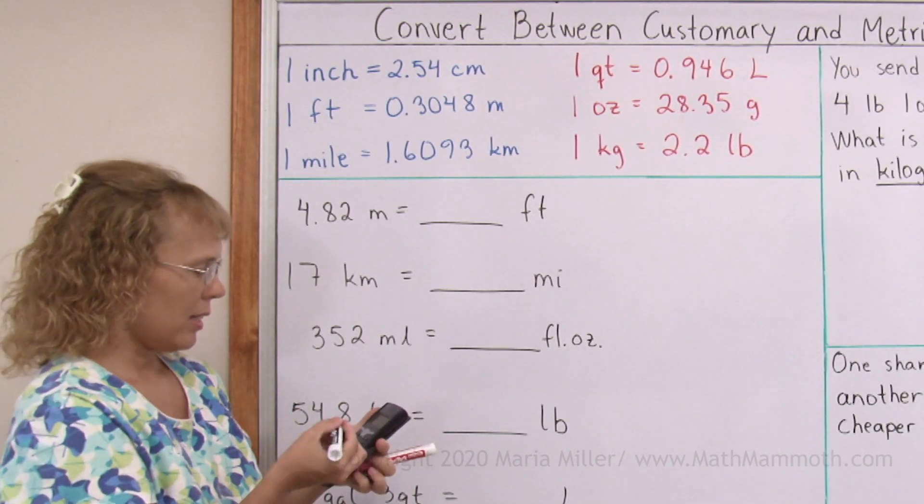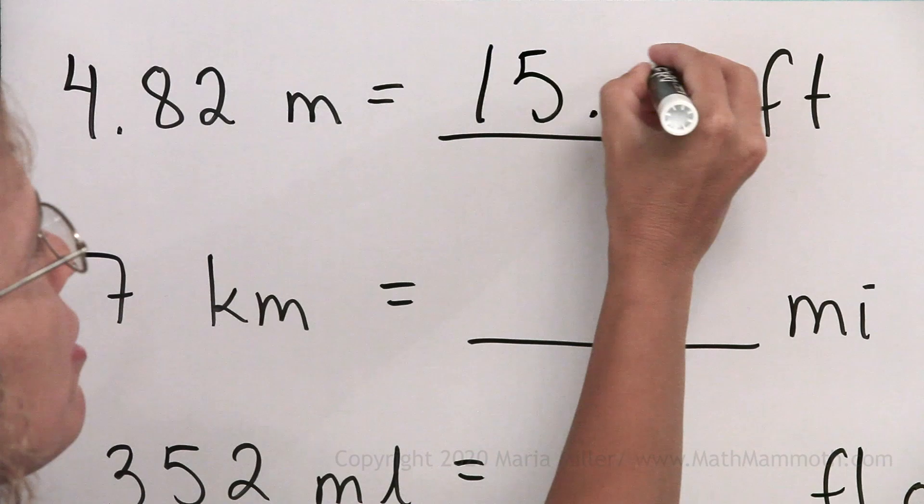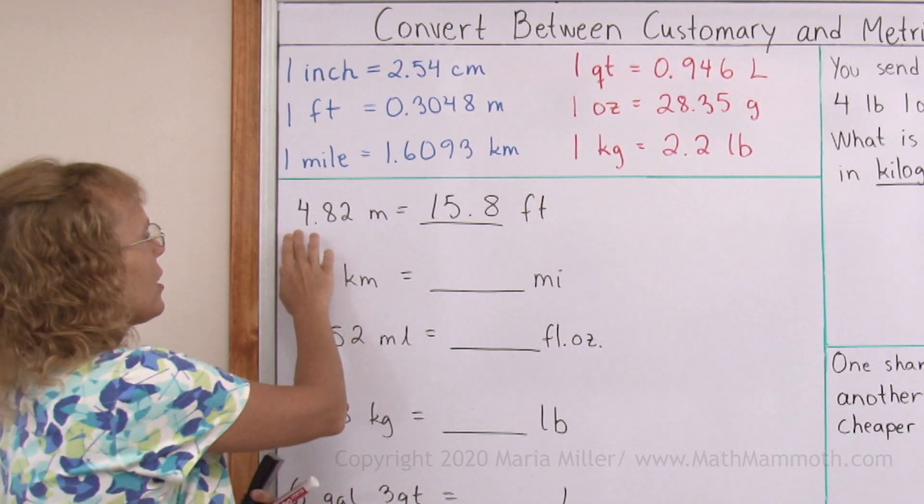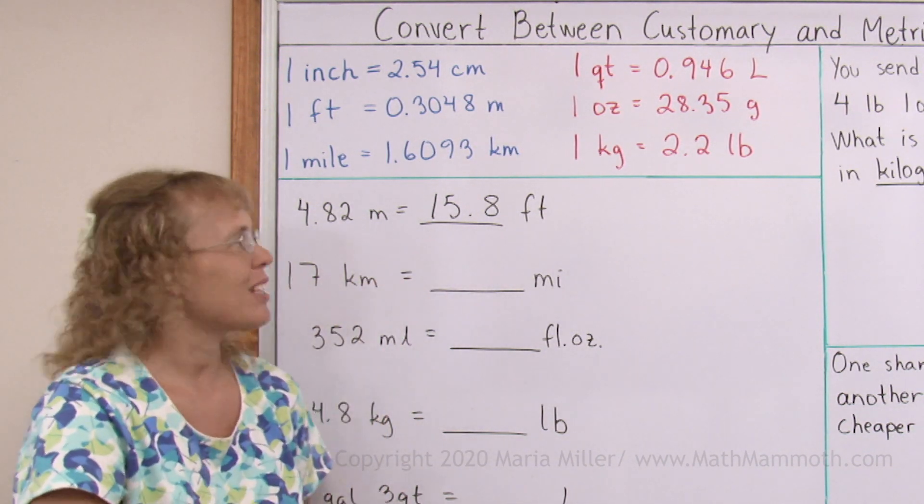And I'm going to round it to one decimal digit. It's about 15.8 feet. And that makes sense. This is about five meters and I get about three times that many in feet.